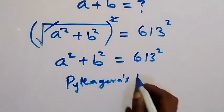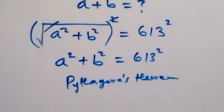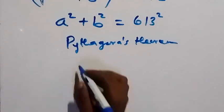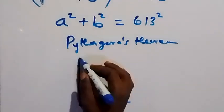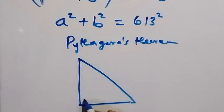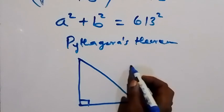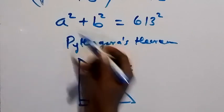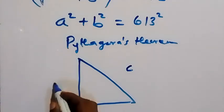Pythagoras' theorem states that in any right angle triangle, the square of the hypotenuse equals the sum of the squares of the two other sides. This side as a and this side as